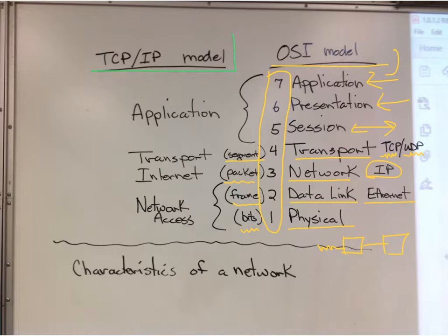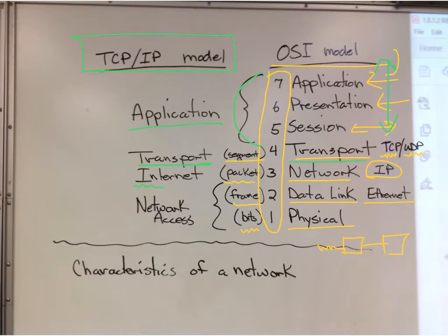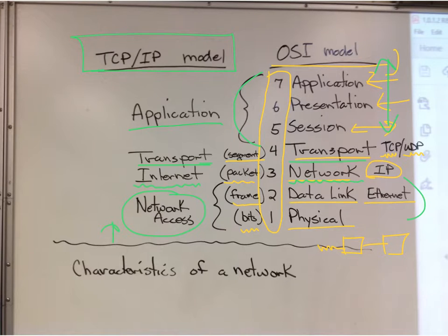If we talk about the TCP/IP model, this whole group is called the application layer, because it's really about getting connected to the app and getting the data. Transport is the same. They call this the internet layer instead of the network layer — basically does the same thing. These two layers are how our device accesses the network, whatever device it is. Nowadays with the Internet of Things, it could be anything.